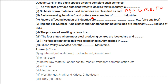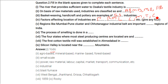Basket weaving, handicraft, and pottery are examples of small-scale industries. Factors affecting location of industries are power, raw material, labor, capital, market, transport, and communication.